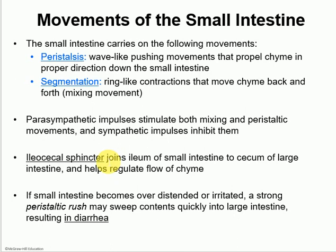The ileocecal sphincter connects the terminal ileum — the terminal part of the small intestine — to the cecum, which is the very beginning of the large intestine. We would have to relax that sphincter so that the chyme can go from the small intestine into the large intestine, helping regulate the flow of chyme. In the case of diarrhea, there would be either irritation of the intestinal wall by a germ or over-distention from over-eating, and that would lead to a very strong peristaltic rush. If that rush happens, there is no time to absorb nutrients, so all of the nutrients with all the water in there is rushed into the large intestine and then out of the body, resulting in diarrhea.